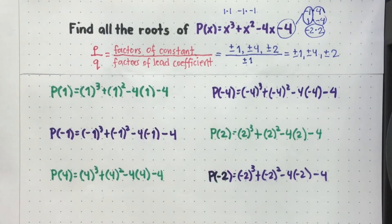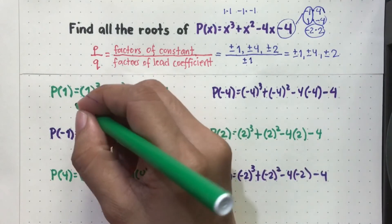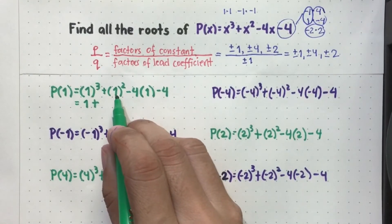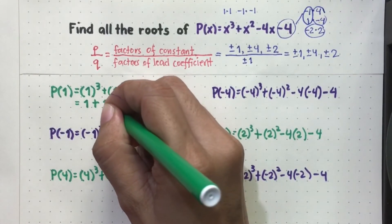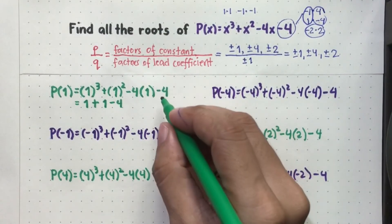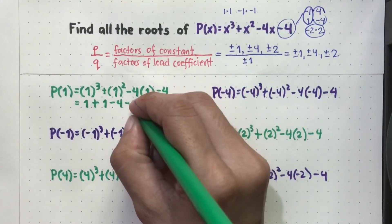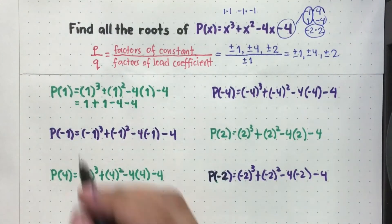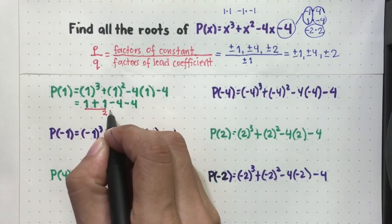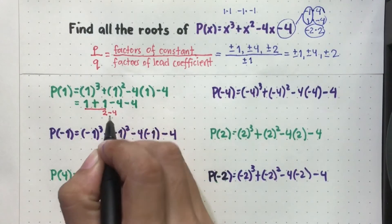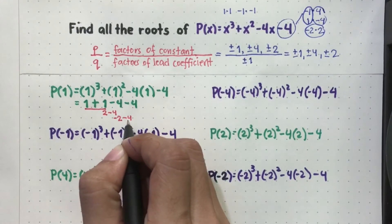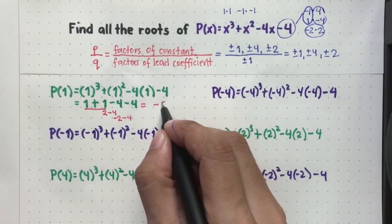Starting with P(1): 1 cubed is 1 times 1 times 1, which equals 1. Plus 1 squared, which is 1. Then negative 4 times 1, that's negative 4. And copy minus 4. Solving: 1 plus 1 is 2, then 2 minus 4 is negative 2, minus another 4, so negative 2 minus 4 gives us negative 6. So P(1) = -6, hindi siya isang root.